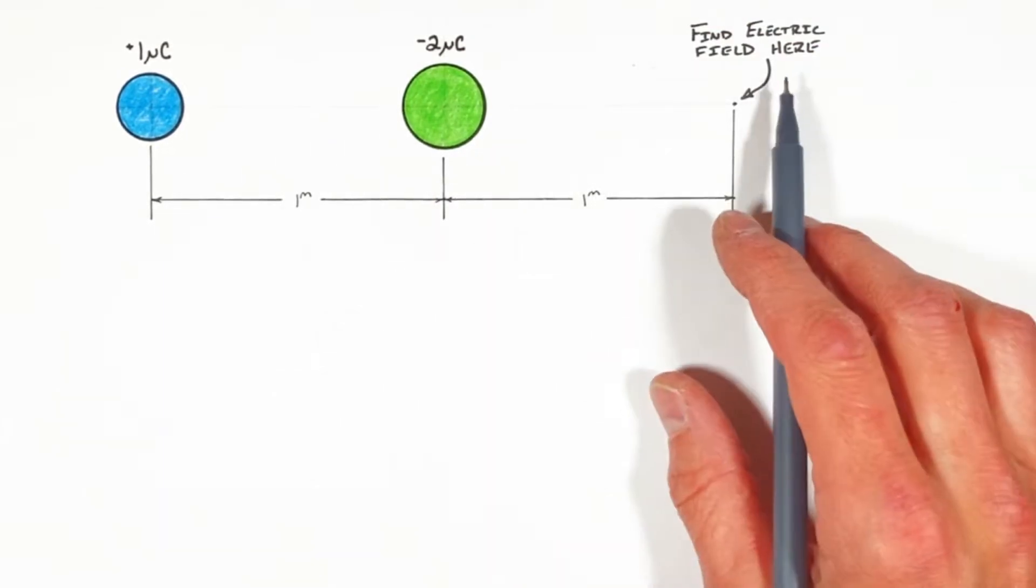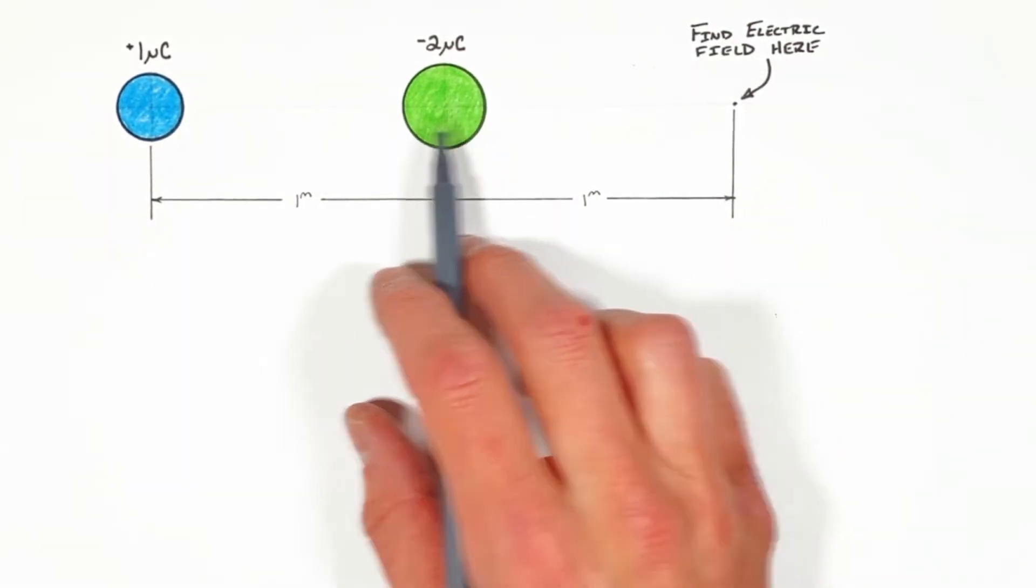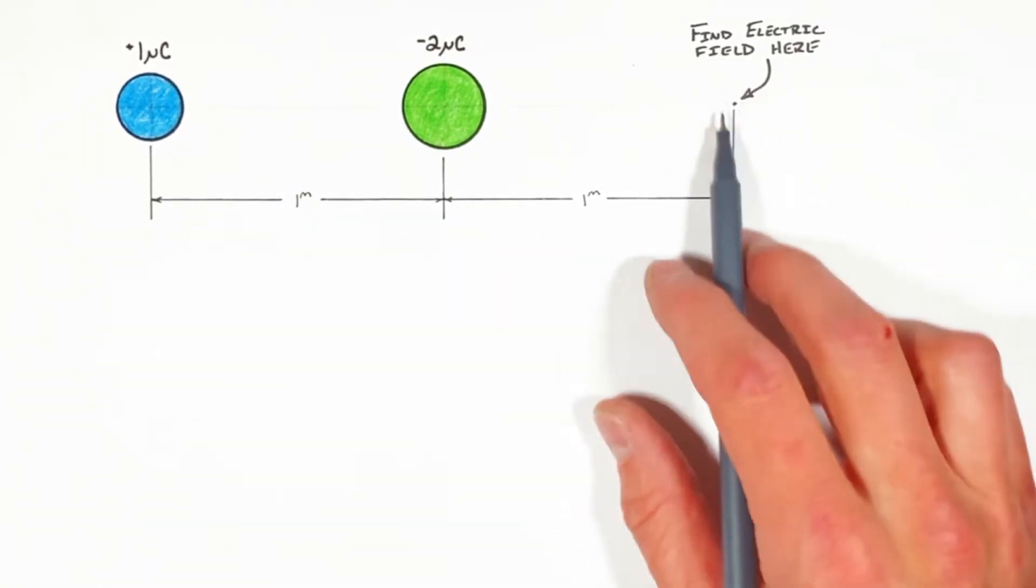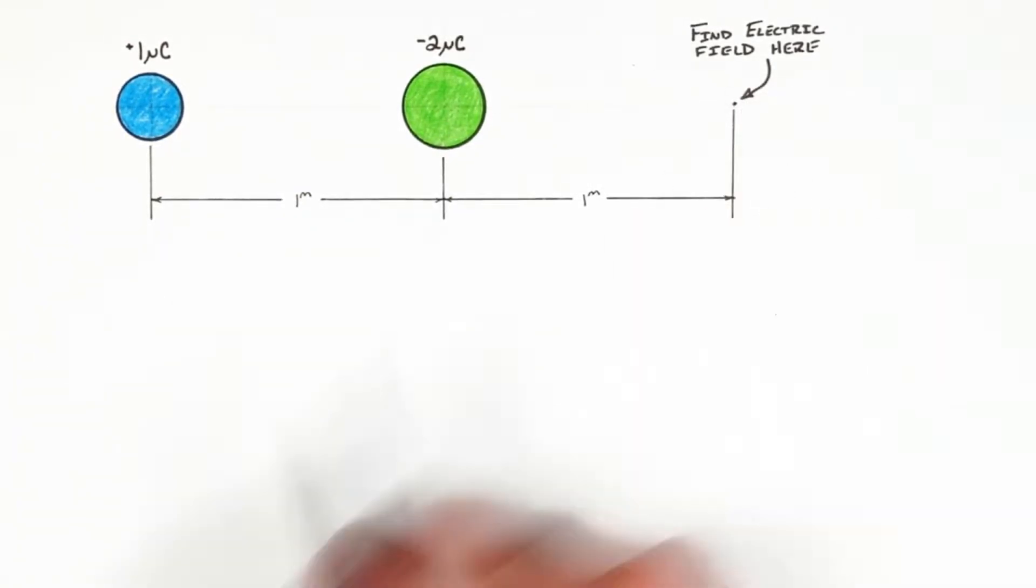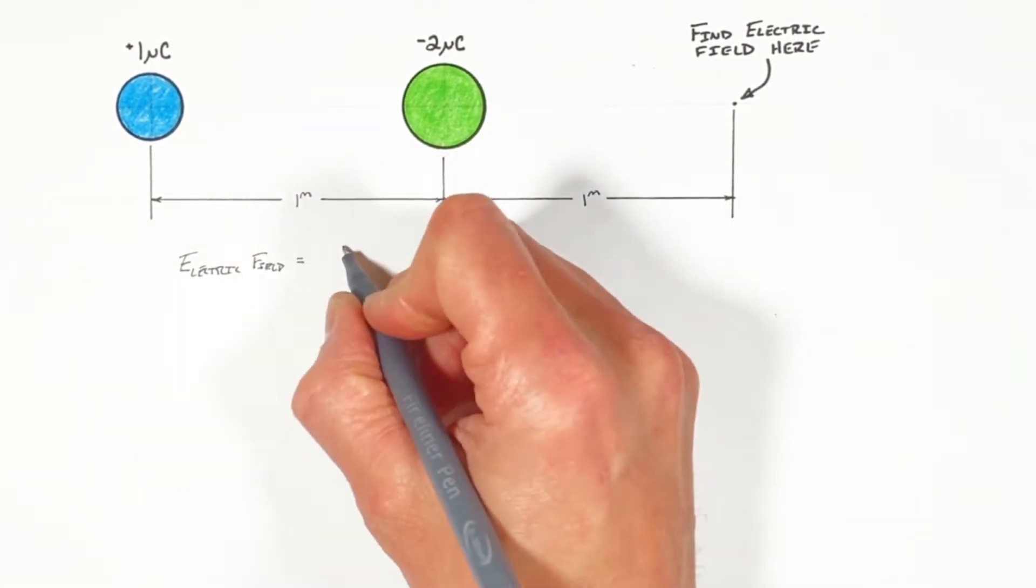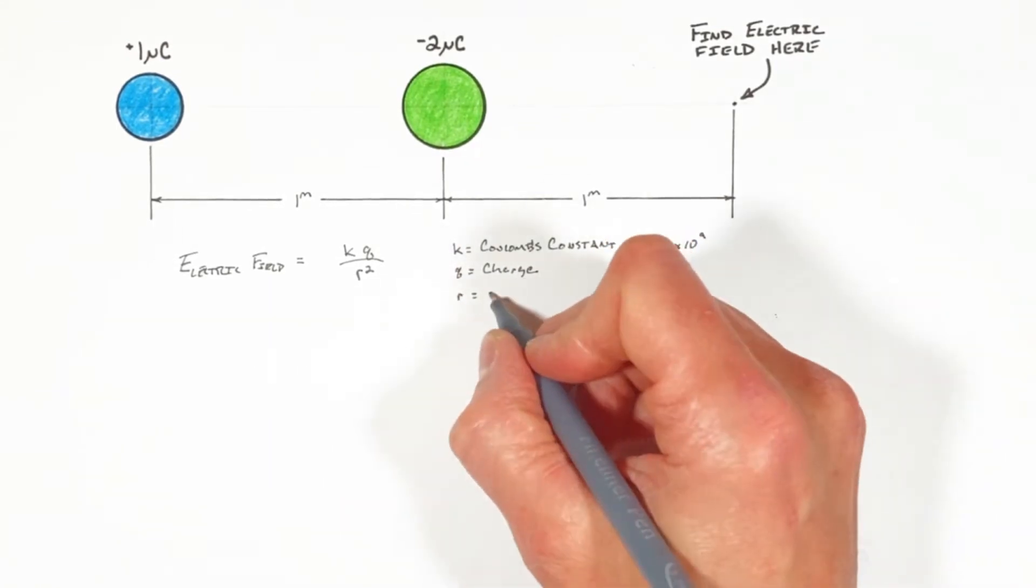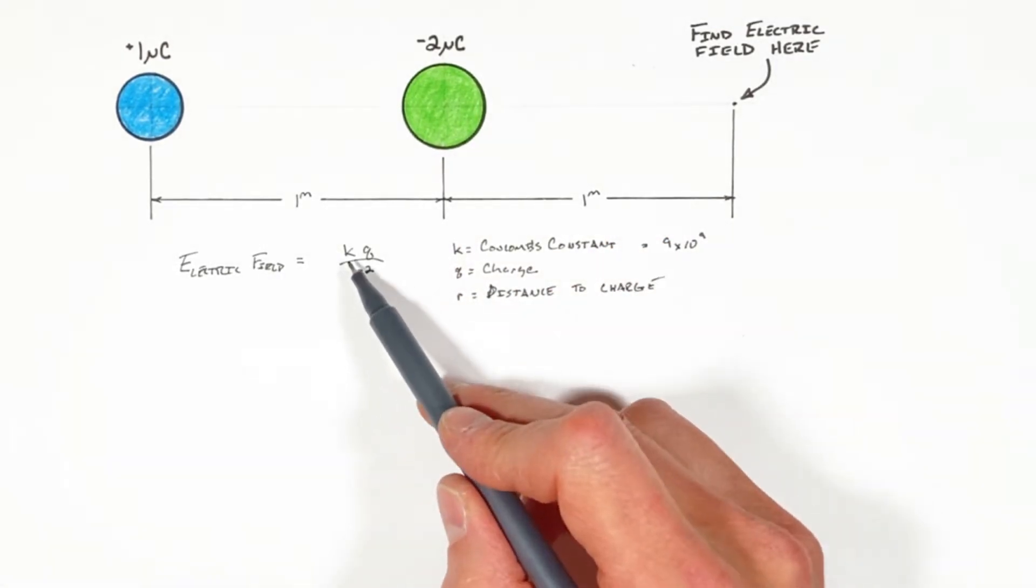All right YouTube, today we're going to solve for the electric field which is produced by two charges along some line, in this case this point right here. Now the equation for electric field is given by this equation.